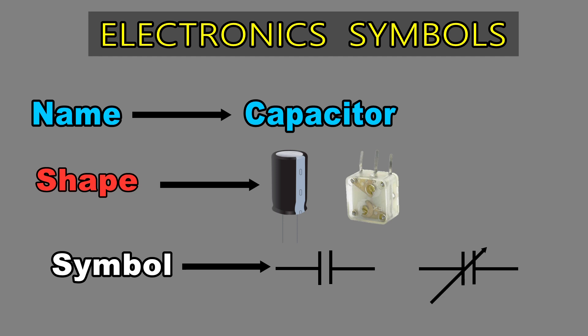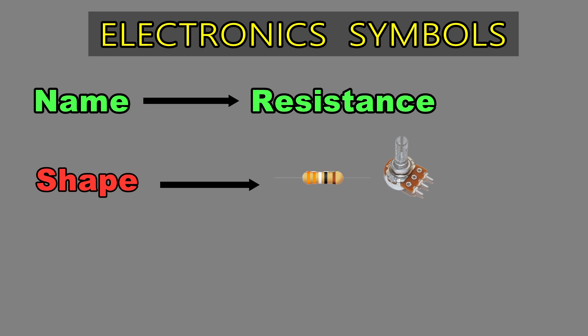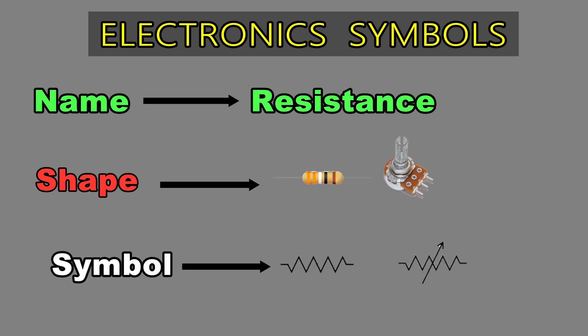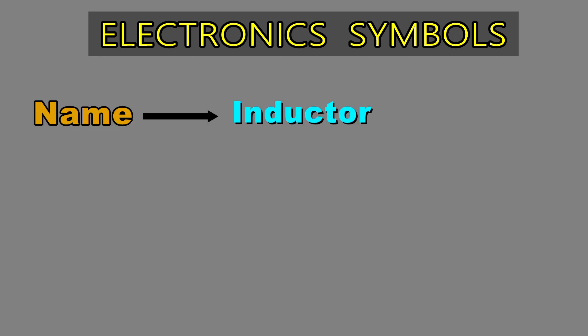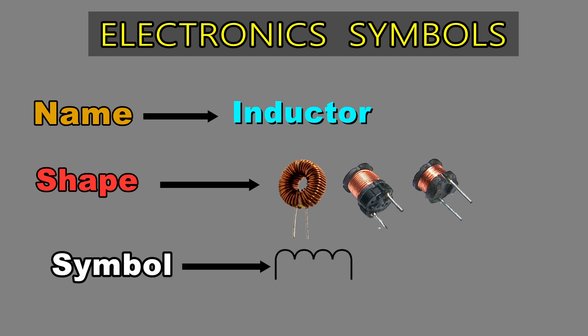A capacitor is a passive electronic component with two terminals. Resistance is a measure of the opposition to current flow in an electrical circuit. Resistance is measured in ohms, symbolized by the Greek letter Omega.